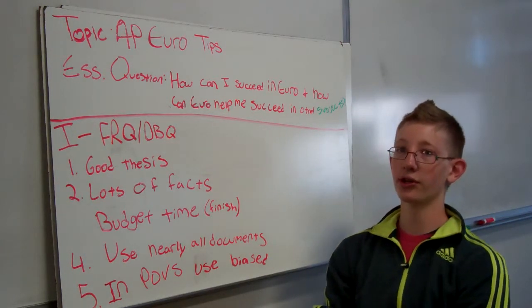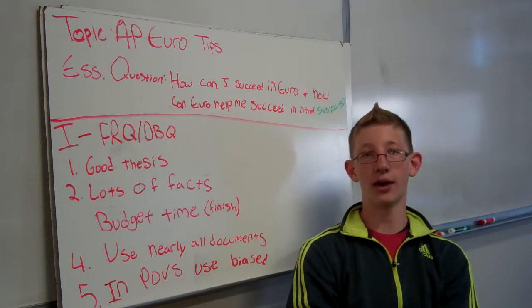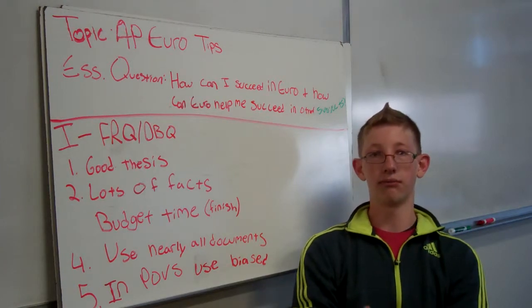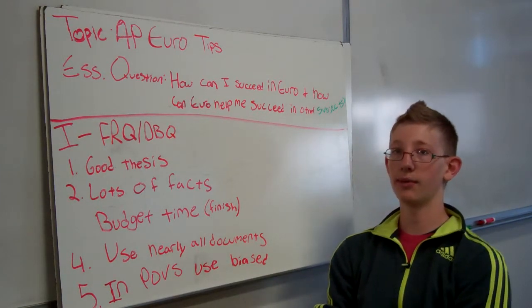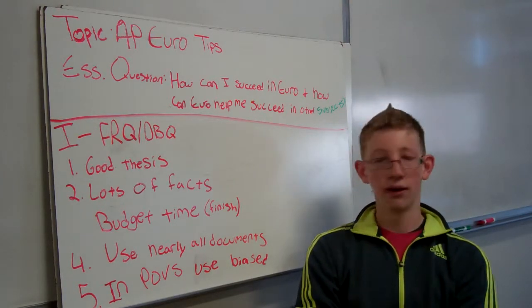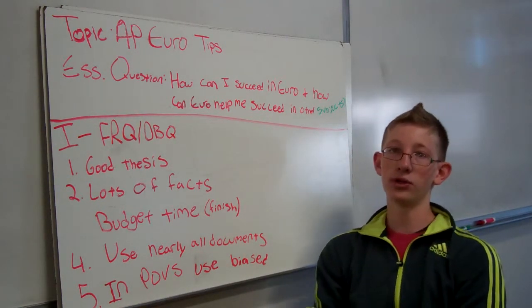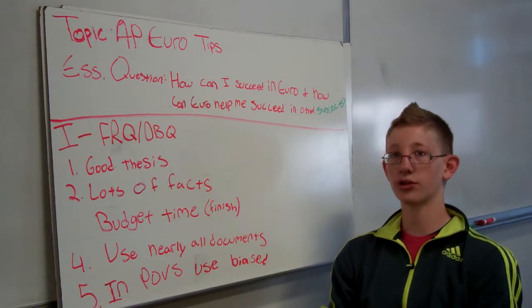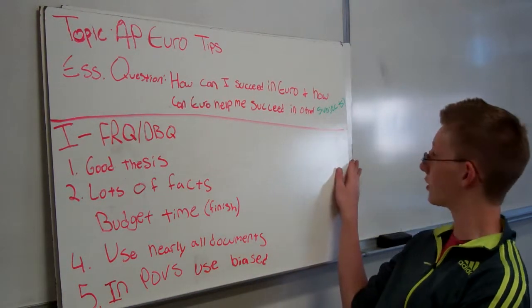You should use nearly all the documents when you're doing the DBQs. That way on the AP test they know you're actually getting it done. And then when you're doing your point of views, use the words biased and point of view so they know it's a point of view.